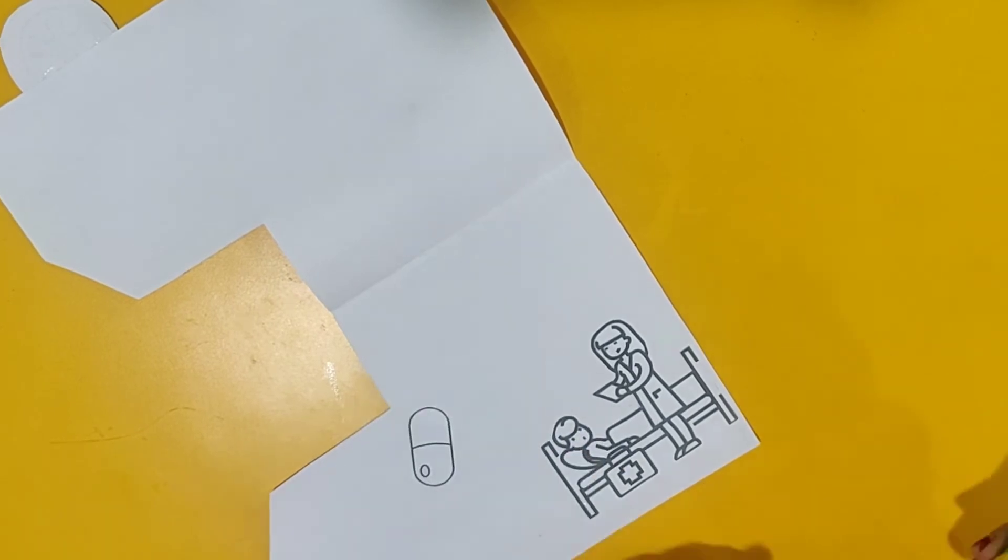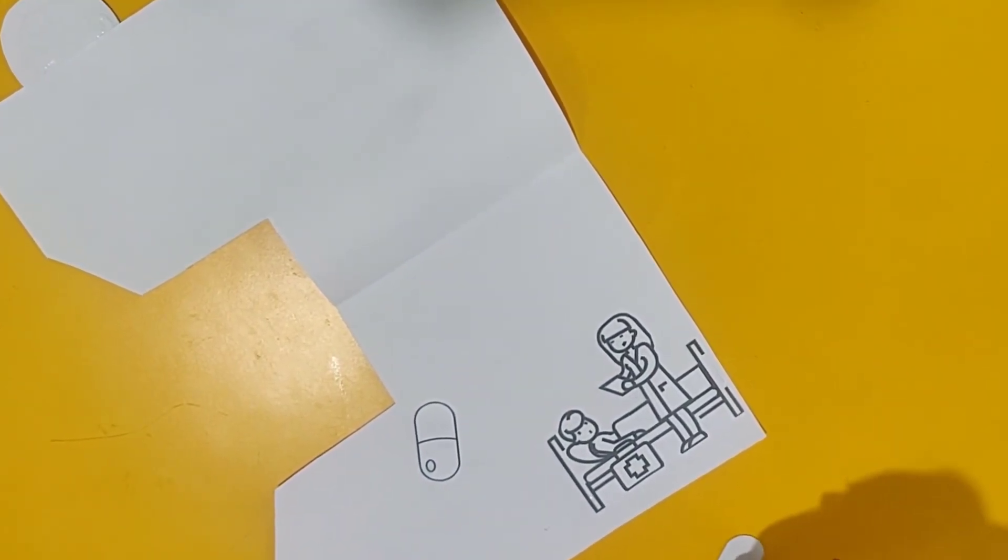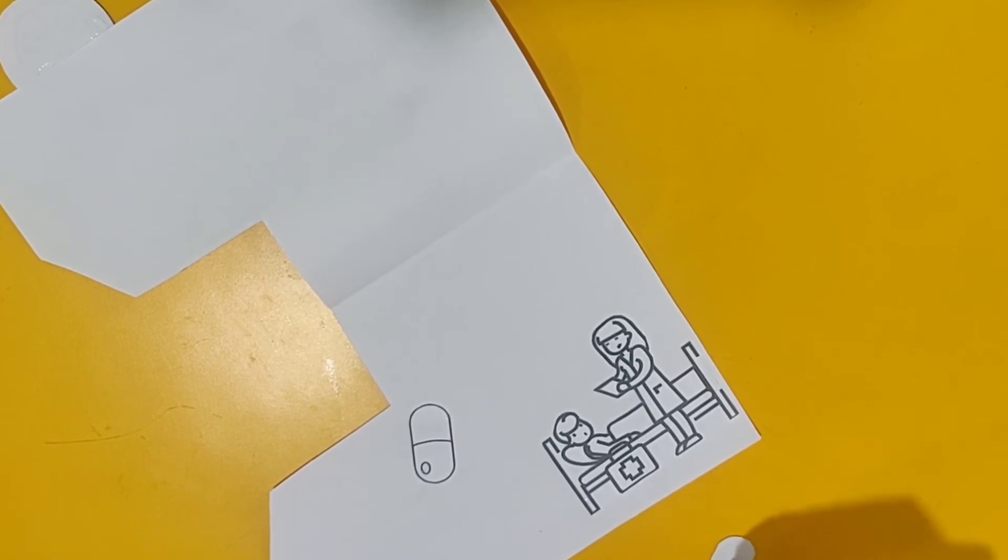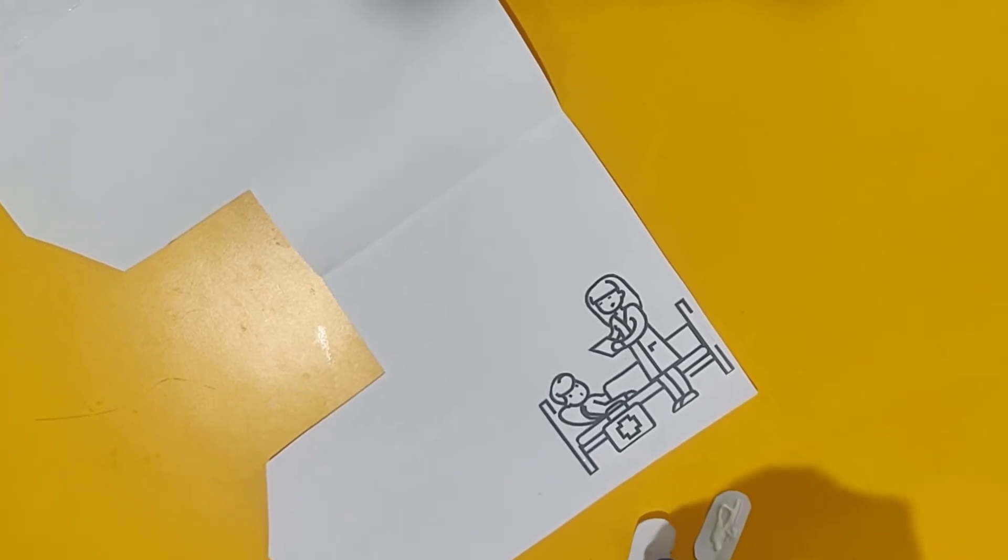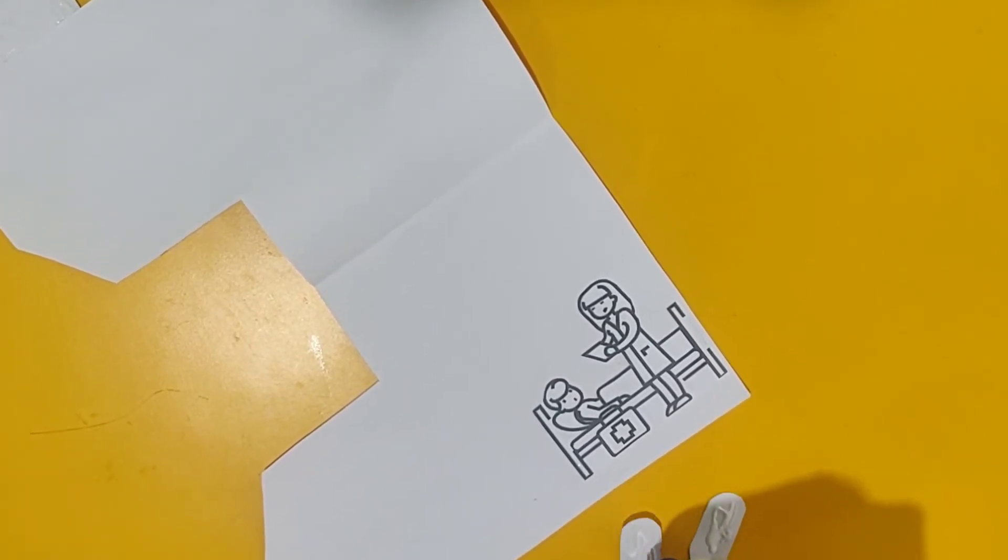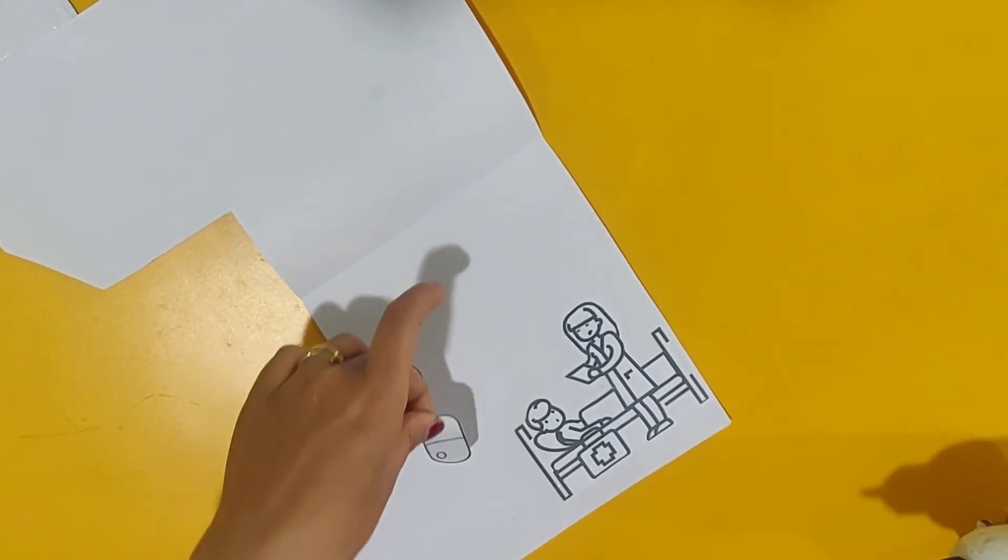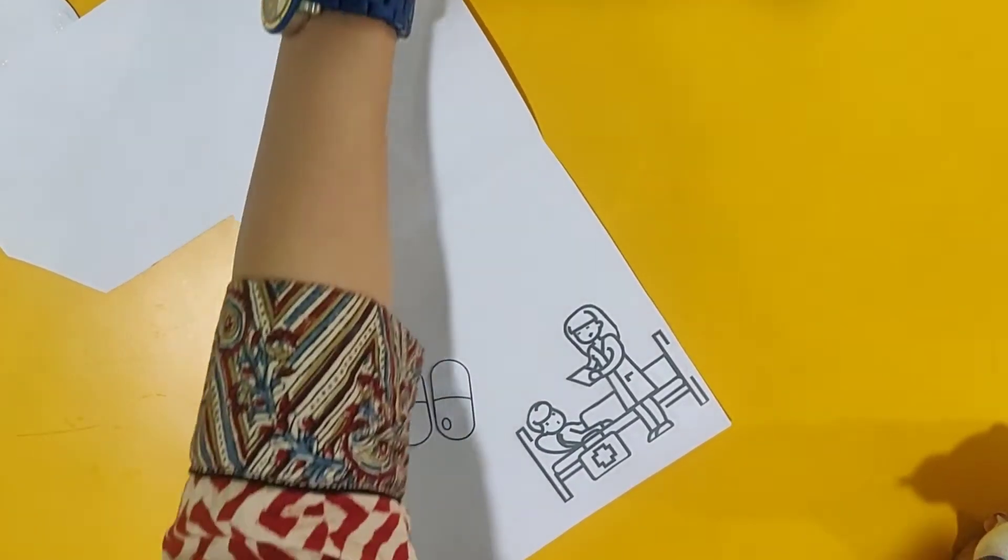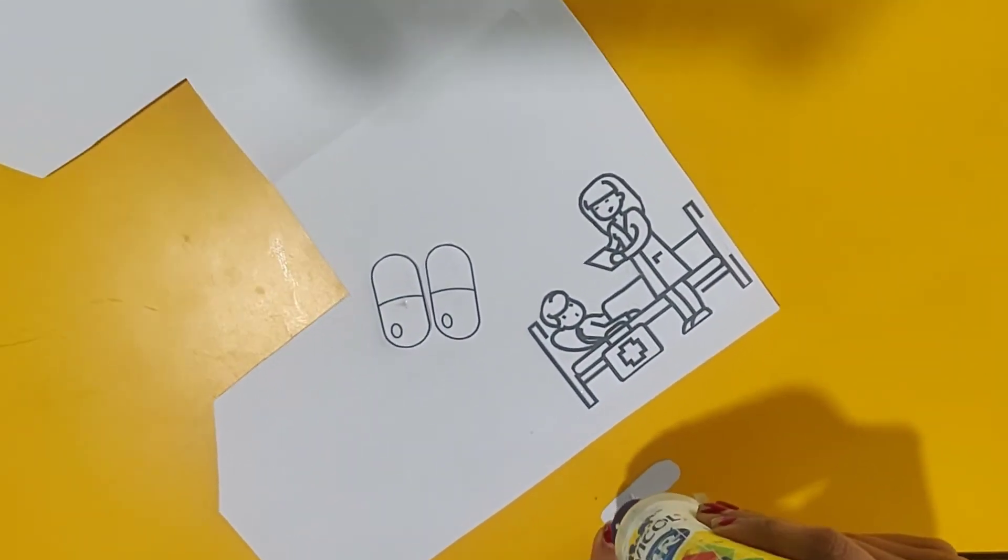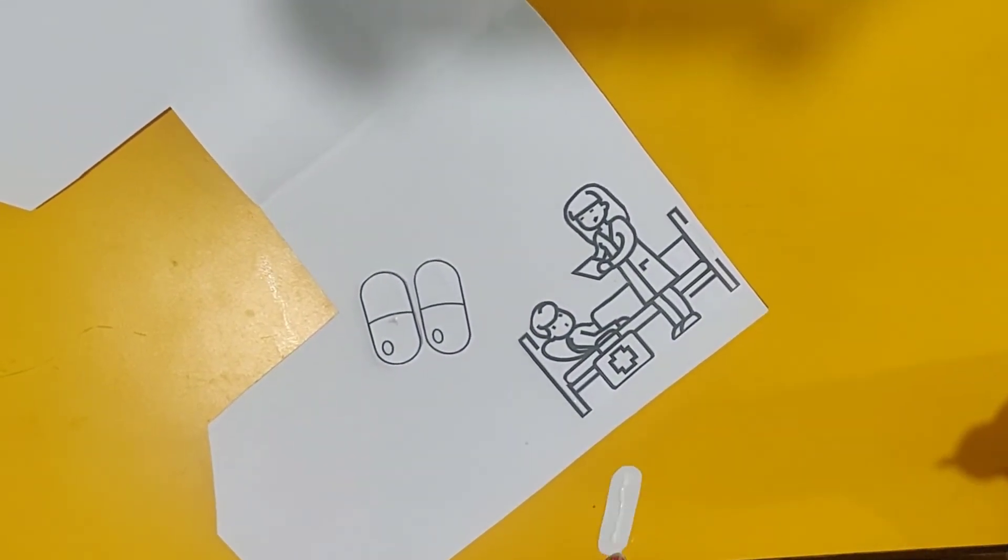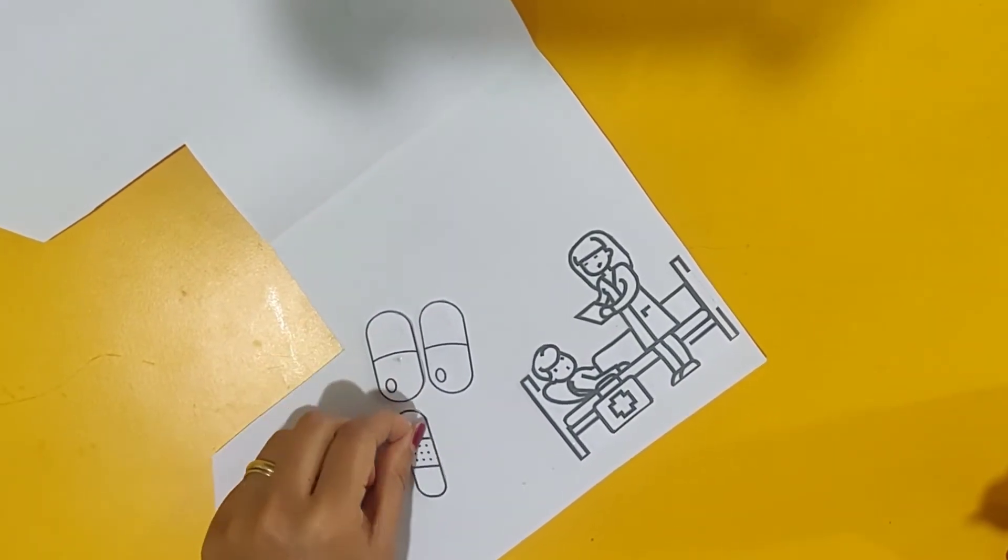So, in an ambulance we can see a doctor, a nurse, a patient. Then medicines will be there. Then we would have a bandage. If the patient has got hurt anywhere, so we can use the bandage to cover the wound.